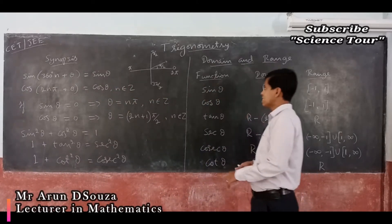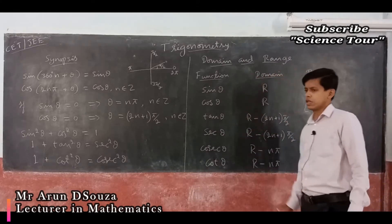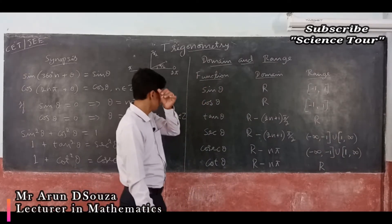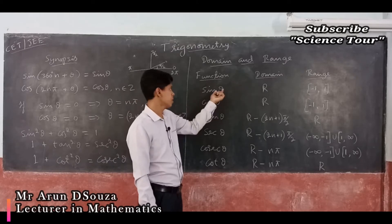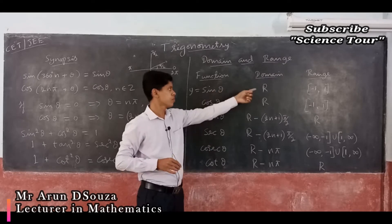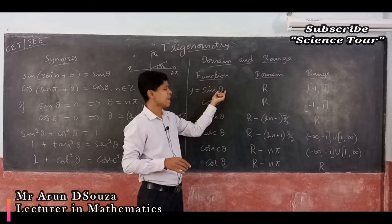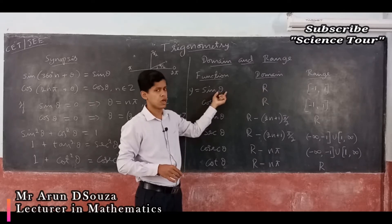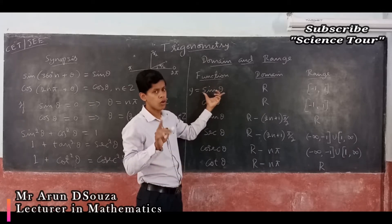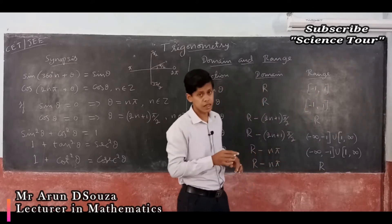Next, let us look at the domain and range of the trigonometric functions — very important to remember. For sin θ, what is the domain? The input values are the domain. For sin θ, θ can be any real number. But the output — the range — will always be between −1 and 1 only. You will never get a value greater than 1.